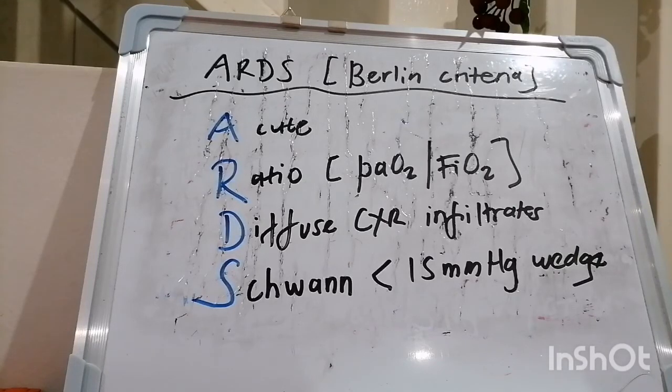Quickly, how do you manage ARDS? So, do your circulation, airway, breathing, and give supplemental oxygen to maintain the sats between 85% to 95%, establish good IV access.